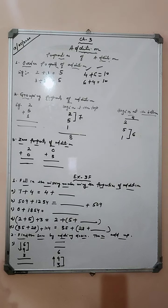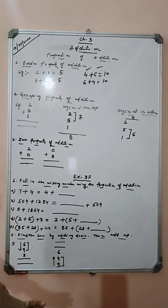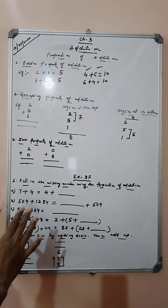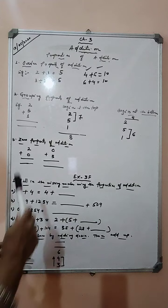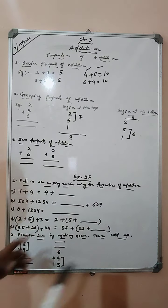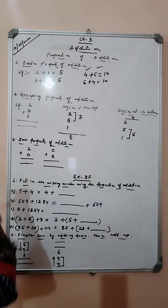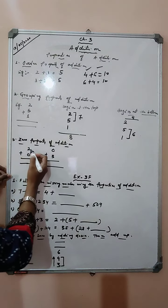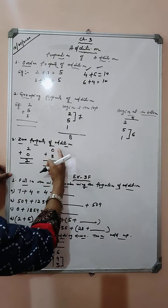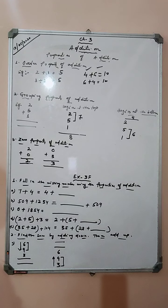So in the grouping property, we group 2 numbers first and then add to the 3rd number. That grouping can be done by taking the first 2 digits or by taking the last 2 digits, but the answer in both cases is the same. Now the 3rd property is the zero property of addition. If we add 0 to any number, the answer is the number itself. Like 2 plus 0 is 2, and 0 plus 3 is 3. When 0 is added to any number, the answer is the number itself.